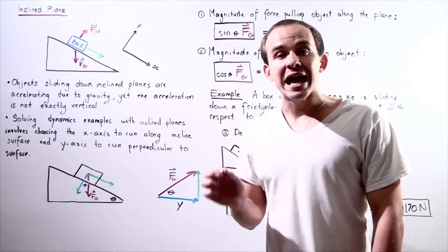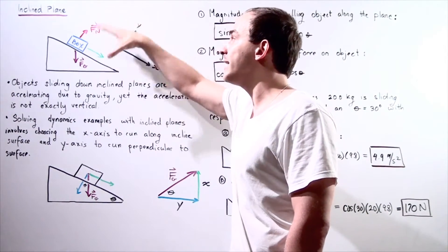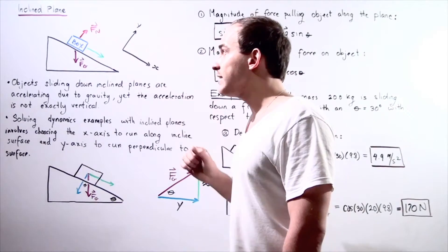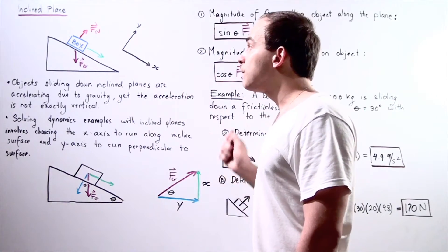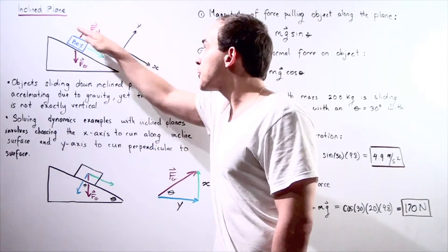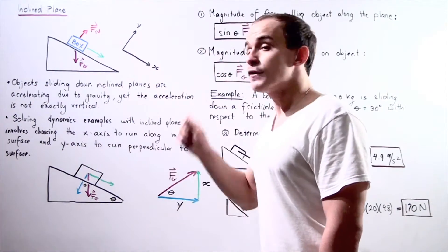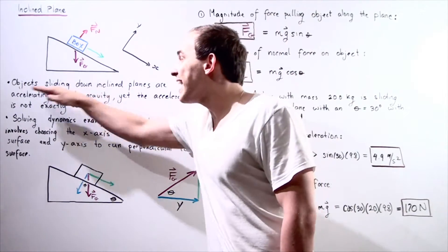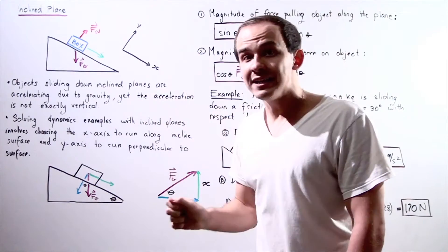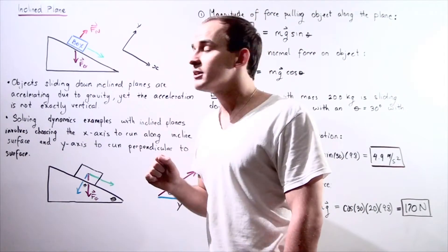The answer is gravity. Gravity acts perpendicular to the surface on which our inclined plane sits. But notice, even though it's perpendicular to that surface, the actual force vector that pulls down on the box is parallel to the surface of our inclined plane. So objects sliding down frictionless inclined planes are accelerating due to gravity, yet the actual acceleration vector is not exactly vertical — it's parallel to the surface of our inclined plane.